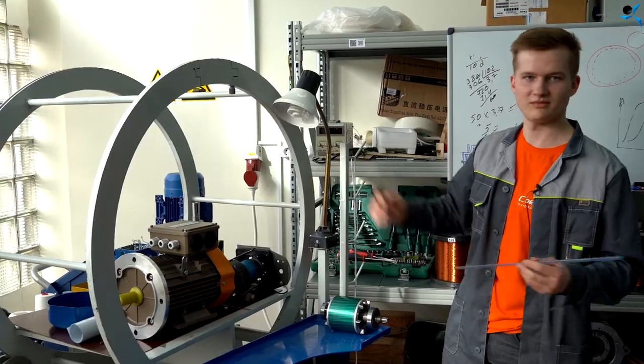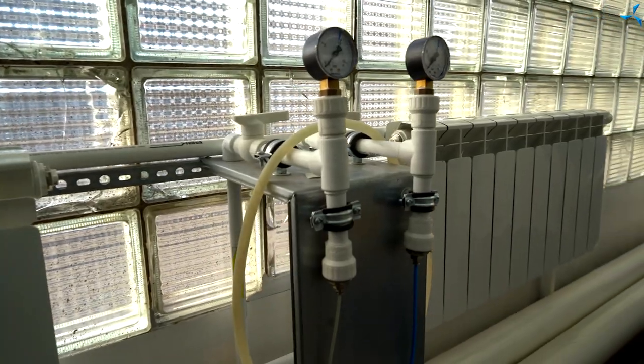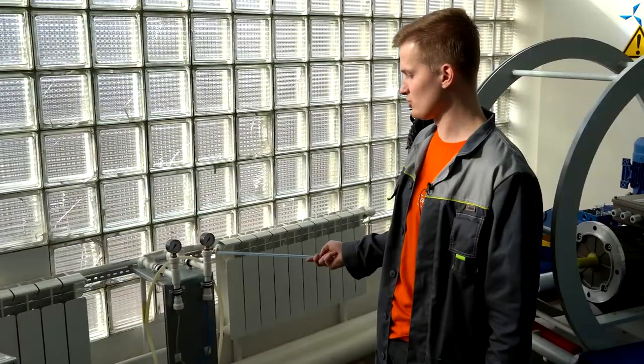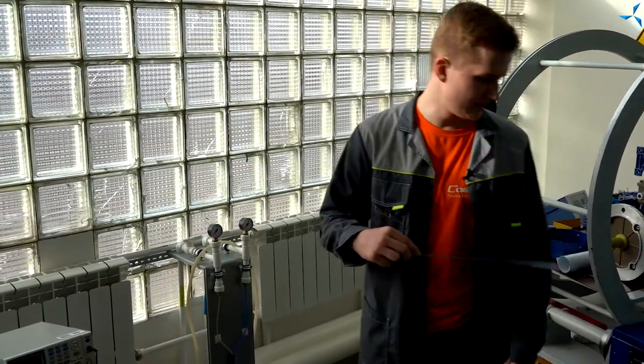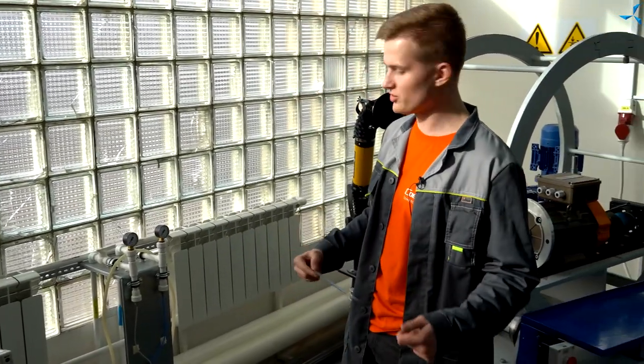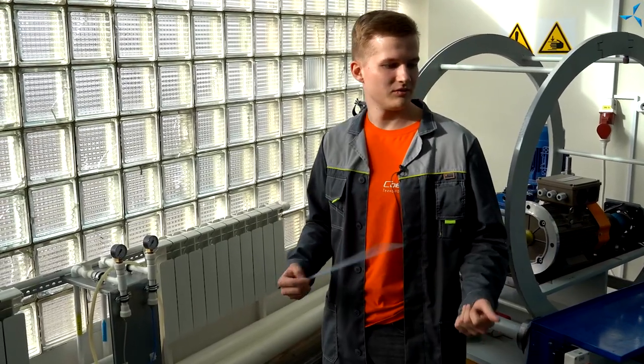The next is a gas supply unit. Nitrogen and compressed air are fed here. Nitrogen is used for contact welding and compressed air is used to purge any places to remove dust from hard-to-reach places.